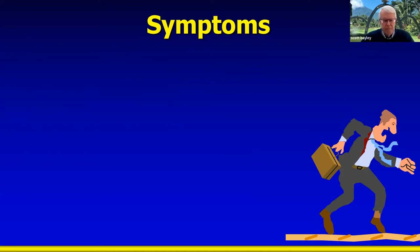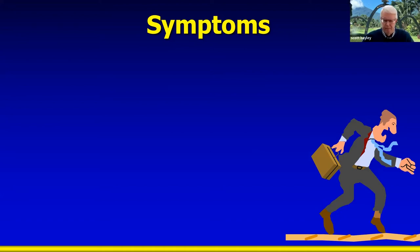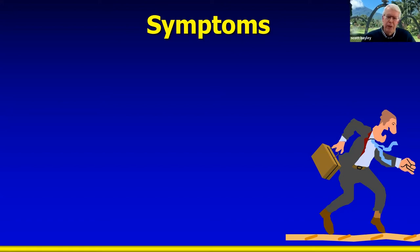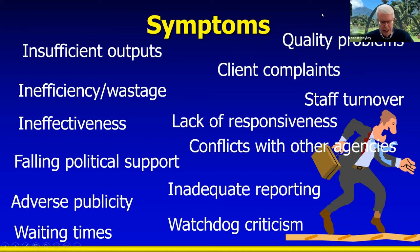Some common symptoms include things like quality problems, client complaints, staff turnover, insufficient outputs, wastages, inefficiencies, ineffective programs, programs that aren't responsive to their client group, limited external political support, adverse publicity, inadequate reporting, excessive waiting times, and criticisms from external watchdogs like parliamentary committees or the Auditor-General's office. These are important because without the perception that there's a problem, performance improvement has no starting point. Program managers and public officials need to feel some kind of performance pain.